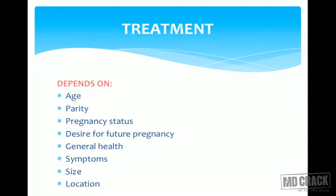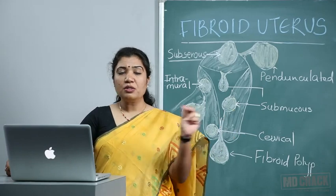The treatment of fibroid depends on the age and parity of the patient — whether she wants to continue menstrual function or have children. Treatment also depends on pregnancy status, desire for future pregnancy, general health, and whether the fibroid is really causing symptoms. You should first ask: is the fibroid causing a symptom?